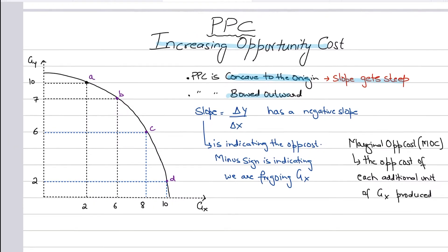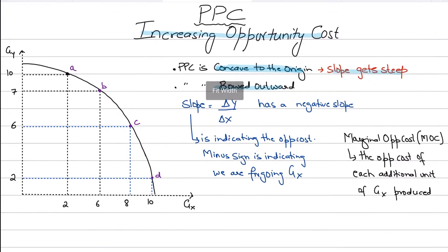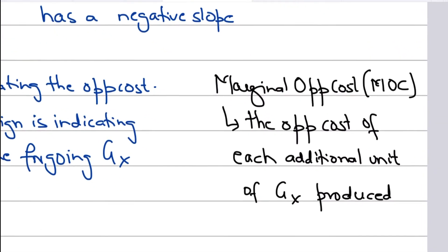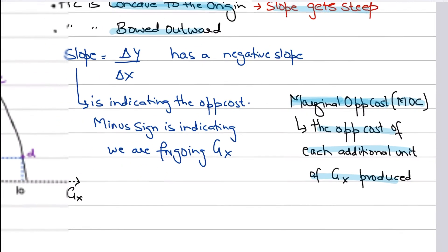Before moving on to increasing opportunity cost, there is another concept I need to discuss: the concept of marginal opportunity cost. Marginal opportunity cost simply means the opportunity cost of producing an extra unit — it is the opportunity cost of each additional unit of good X that will be produced.